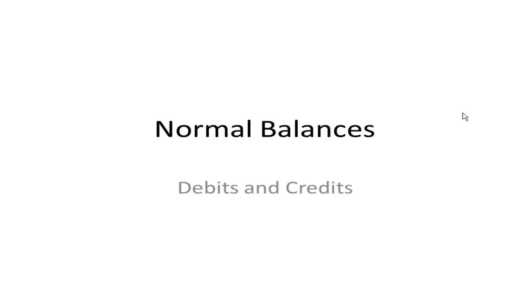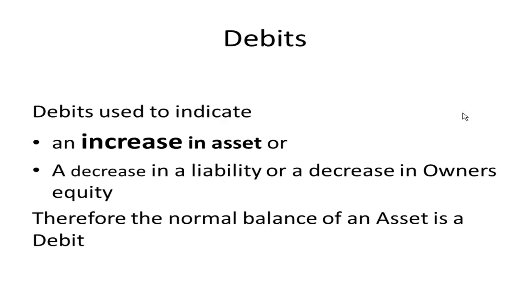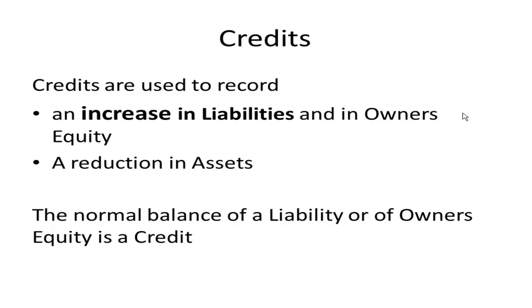This is an introduction to normal balances — we're talking about debits and credits and their role in normal balances. Debits are used to indicate an increase in an asset, and they're also used to indicate a decrease in a liability or a decrease in owner's equity. Therefore, the normal balance of an asset is a debit.